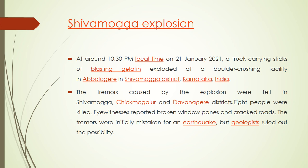The Shivamoga explosion: at around 10:30 PM on 21st January 2021, a truck carrying sticks of blasting gelatin exploded at a boulder-crushing facility in Abalger, Shivamoga district, Karnataka. Tremors were felt across Shivamoga, Chikmagalur, and Davanagere districts. Eight people were killed, and eyewitnesses reported broken window panes and cracked roads. The tremors were initially mistaken for an earthquake, but geologists ruled that out.